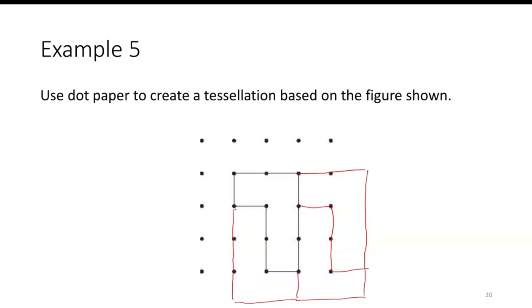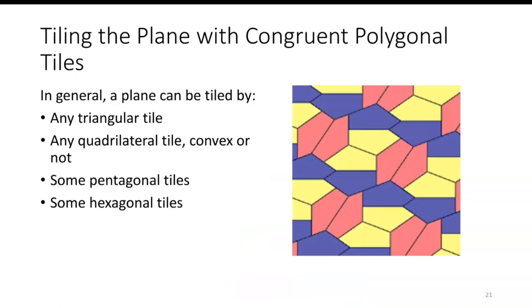This shape here does tessellate. In general, a plane can be tiled by any triangular tile, whether it's an equilateral triangle or any type of triangle. It will tessellate. Any quadrilateral tile will tessellate.